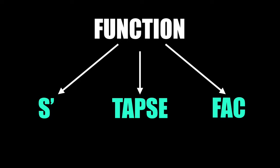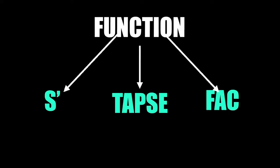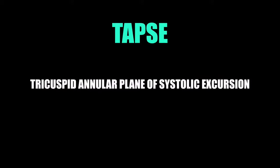We do S prime, which is systolic excursion velocity, and TAPSE — this is the easiest one, so I'd focus on this one. You can also do fractional area change. The reason why we say TAPSE is because it's way easier to say than tricuspid annular plane of systolic excursion.